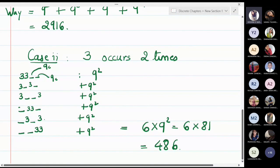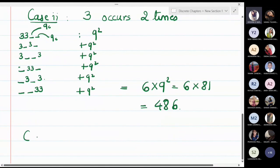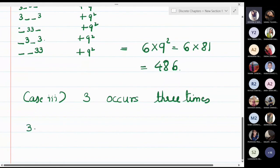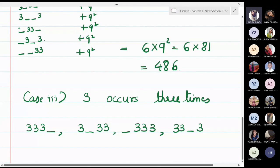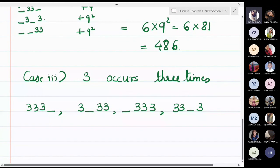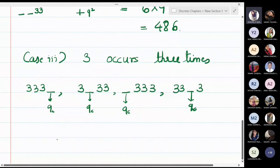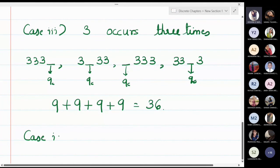Case 3: three occurs exactly three times. The possible patterns for a four-digit number are: 3 3 3 _, 3 3 _ 3, 3 _ 3 3, and _ 3 3 3 — that's 4 arrangements. The one remaining position has 9 choices. So the total is 4 × 9 = 36 such numbers.